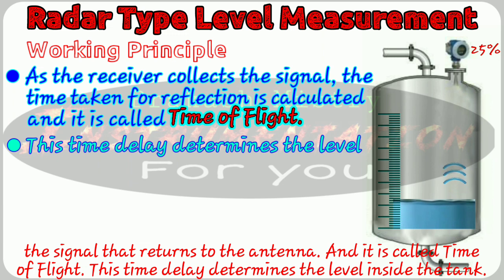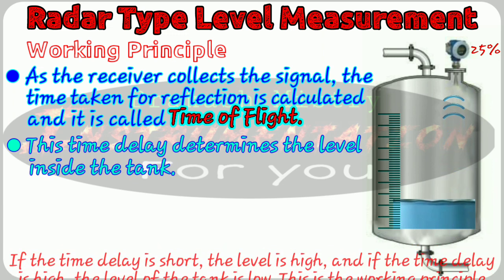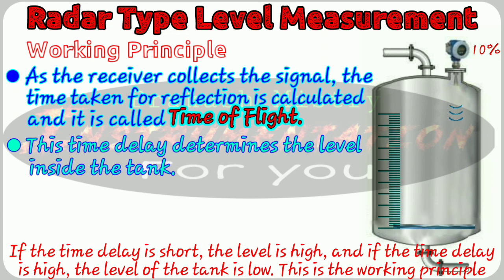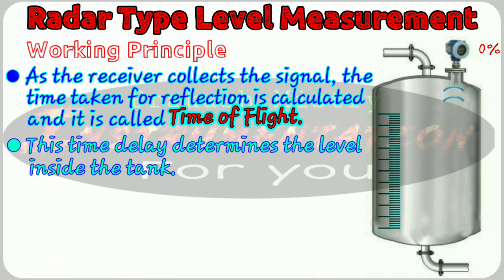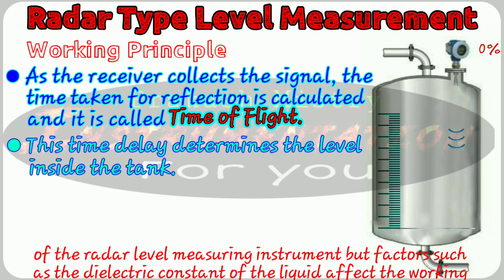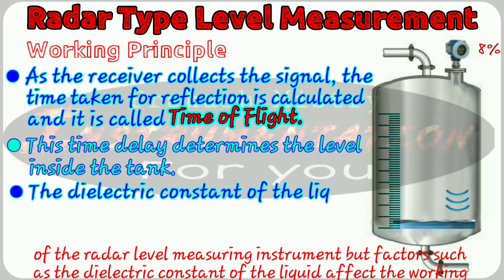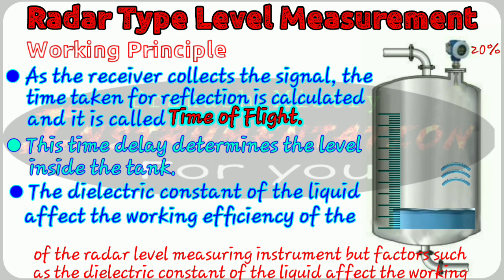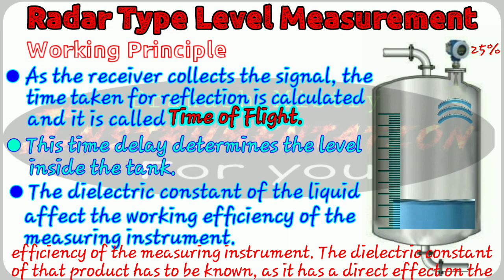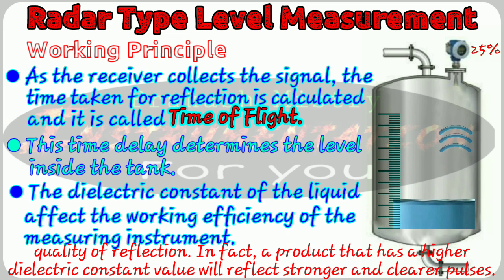This time delay determines the level inside the tank. If the time delay is short, the level is high; if the time delay is high, the level of the tank is low. This is the working principle of radar level measuring instruments. However, factors such as the dielectric constant of the liquid affect the working efficiency of the measuring instrument. The dielectric constant of the product must be known as it has a direct effect on the quality of the reflection.